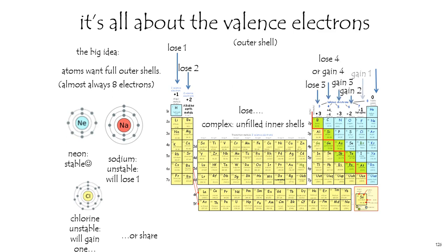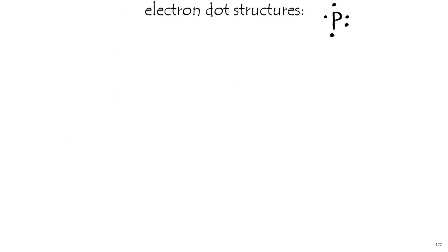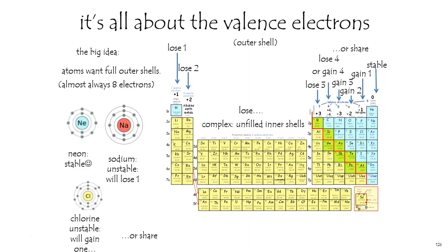That's the behavior. As a result of this, we can draw electron dot structures, which will be a little summary of those valence shells, and that is the subject of the next slide.